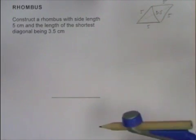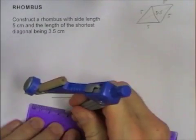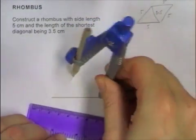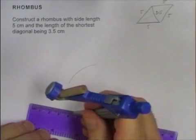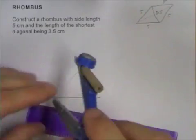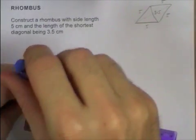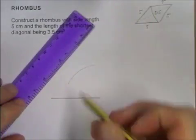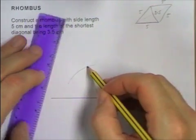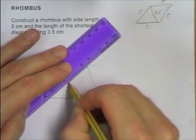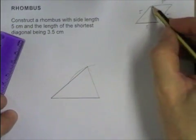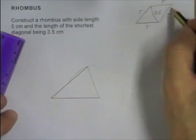Set this to be 3.5. So, 3.5 is somewhere over there. Set it to be 5. That's 5. So, if I join that up there, this is my diagonal of 3.5. This is my second side of my rhombus. Now, I've got my two corners here. I can draw another triangle here, which is 5 cm and 5 cm.